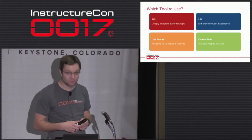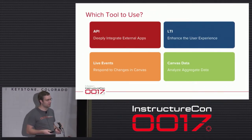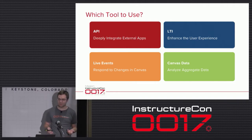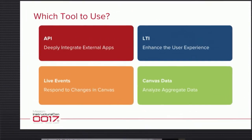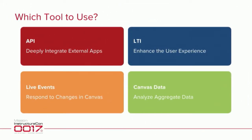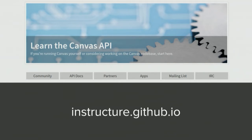We're about out of time. As a summary of the tools for the job: API lets you deeply integrate with Canvas. LTI lets you expose windows into third-party applications and really polish up UI elements. Live Events lets you respond to changes and actions in Canvas. And Canvas Data lets you analyze aggregate data. If you have any questions or want to look at our documentation, instructure.github.io has a lot of links — we've just barely updated it with a lot of this new content, so we'd invite you to go there and take a look. Thanks for coming.